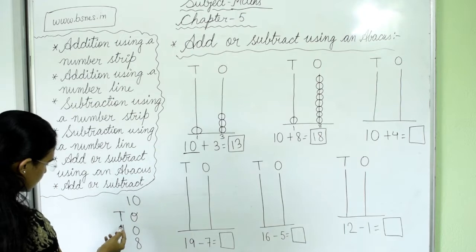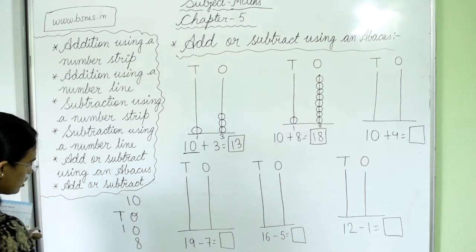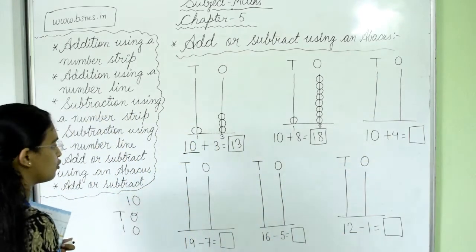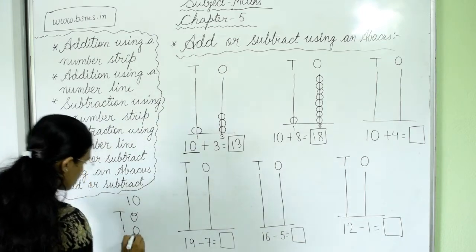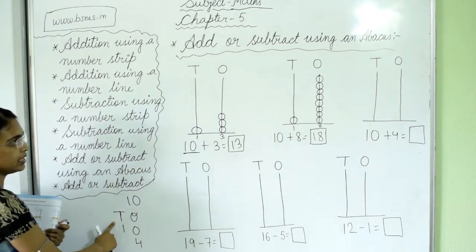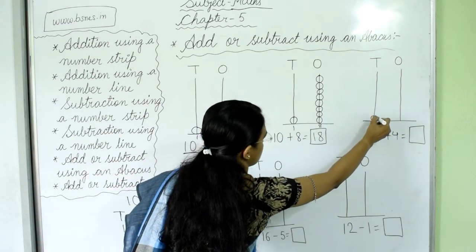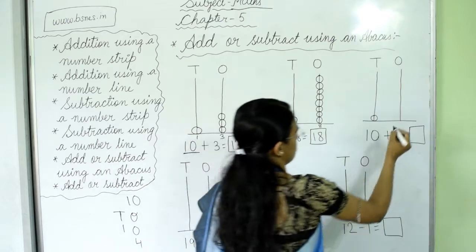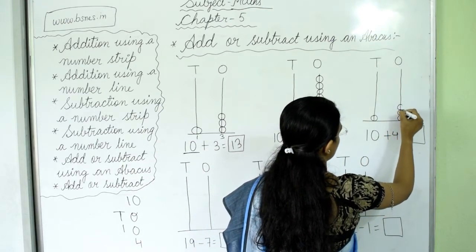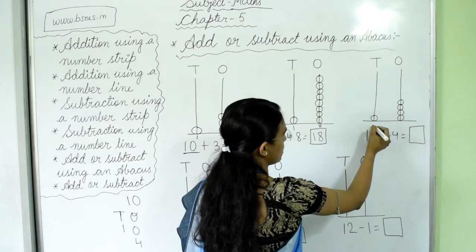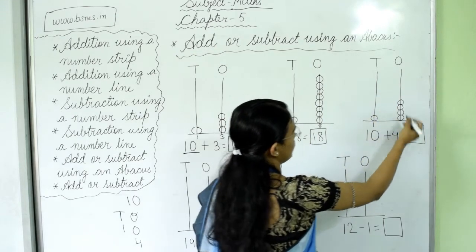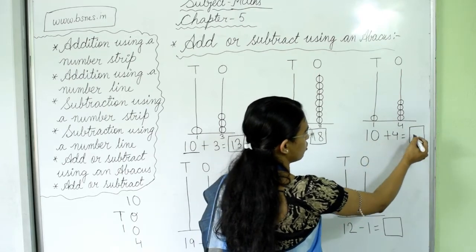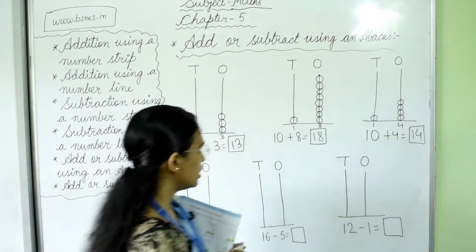Next question is 10 plus 4. Put 1 in tens place and 0 in ones place. Then add 4 — a one-digit number — so put 4 in ones place. Draw one bead in tens place and four beads in ones place: 1, 2, 3, 4. One bead in tens and four in ones gives us 14. So 10 plus 4 equals 14.